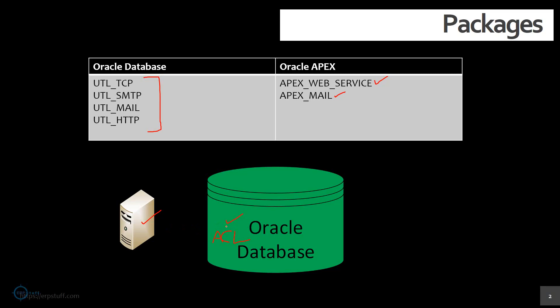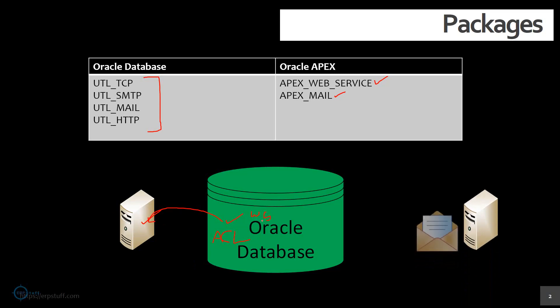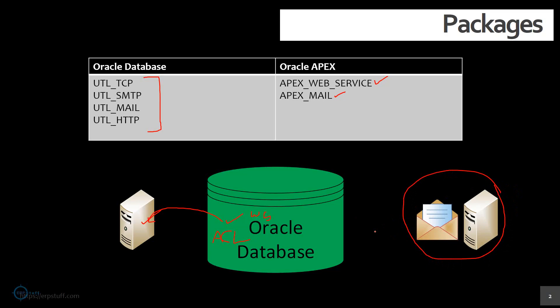This connectivity will be allowed with connect and resolve privileges, and then the database user who has these privileges will be able to access. For example, if I have a user called 'ws' (web service), I will give access to that user for this server and it will be allowed by Oracle database to connect. Similarly, if we have an Exchange server to send emails within our own company network, you still need to define ACL — it is not something only for outside the company.